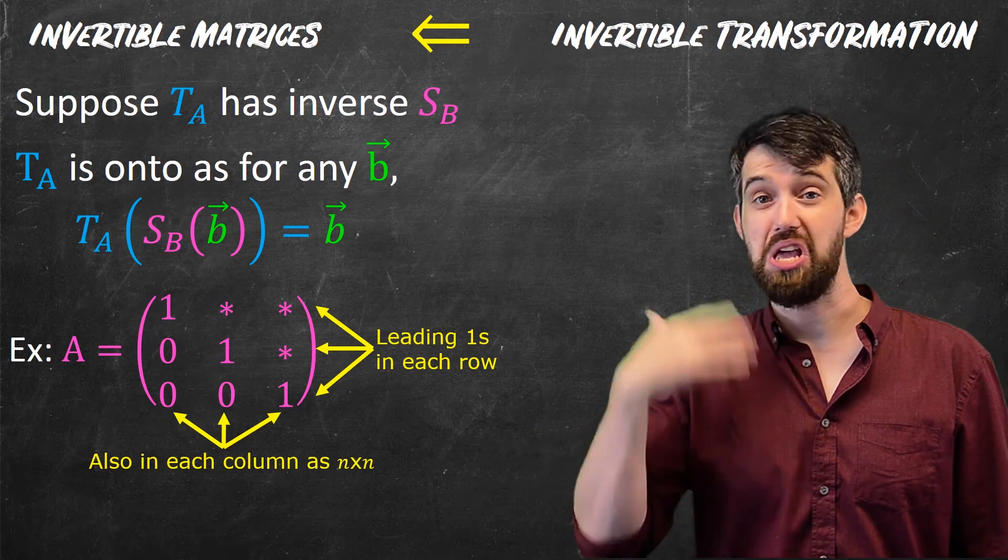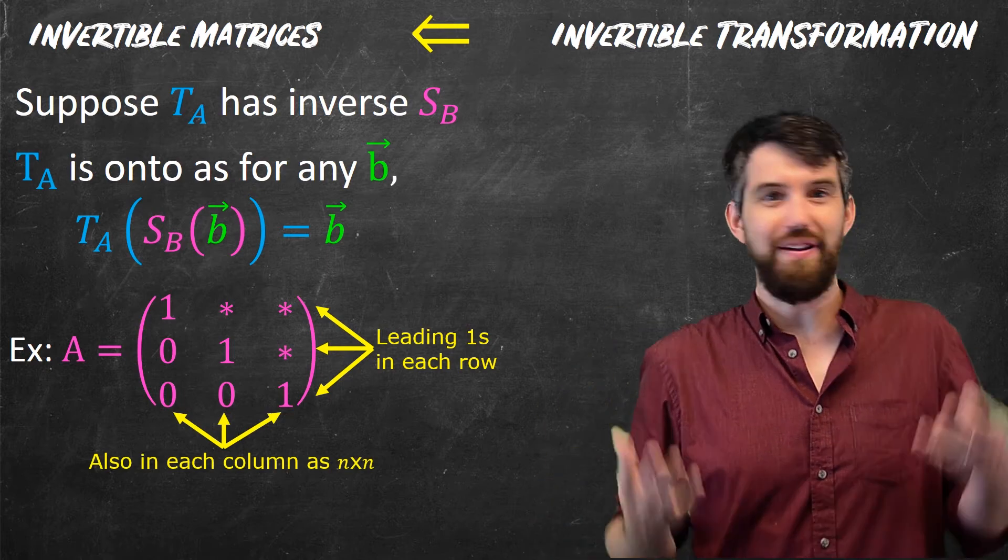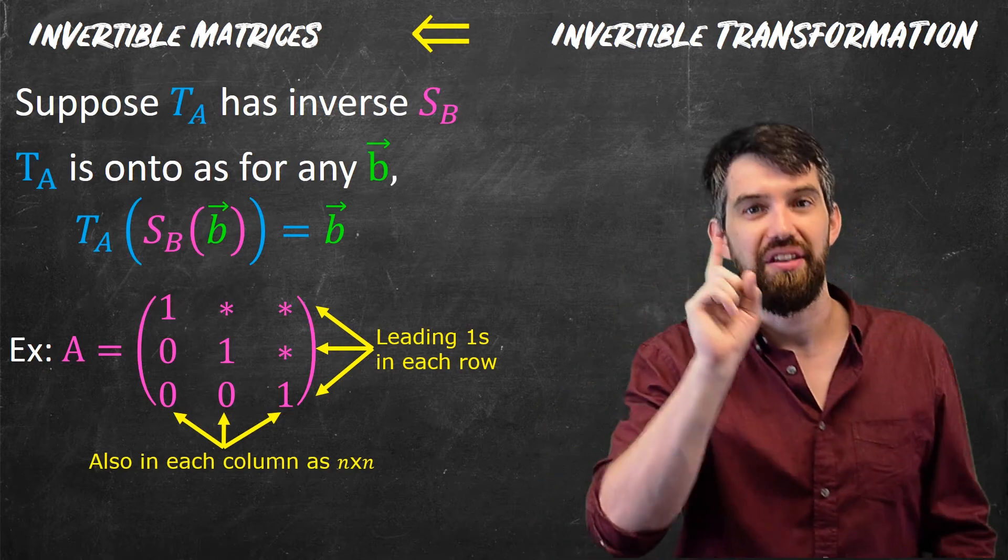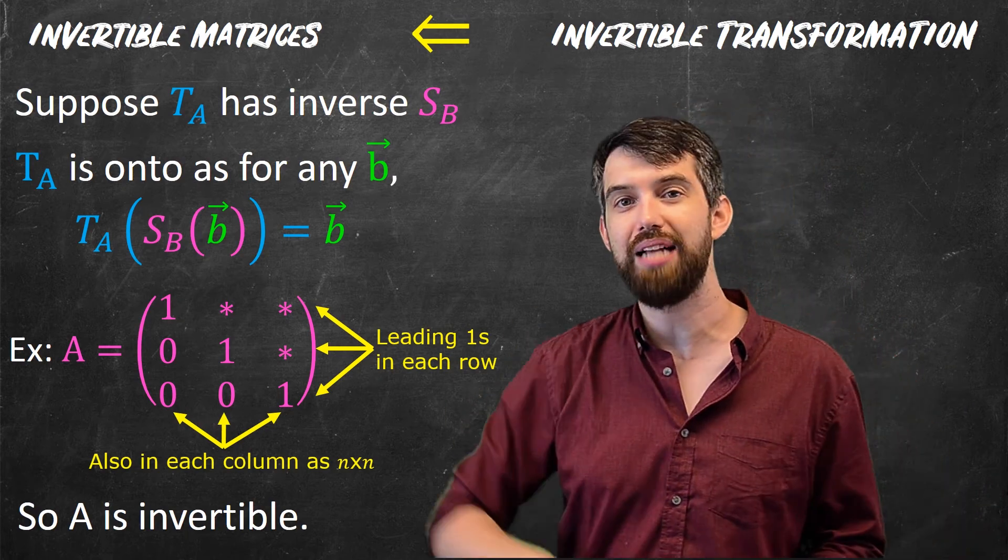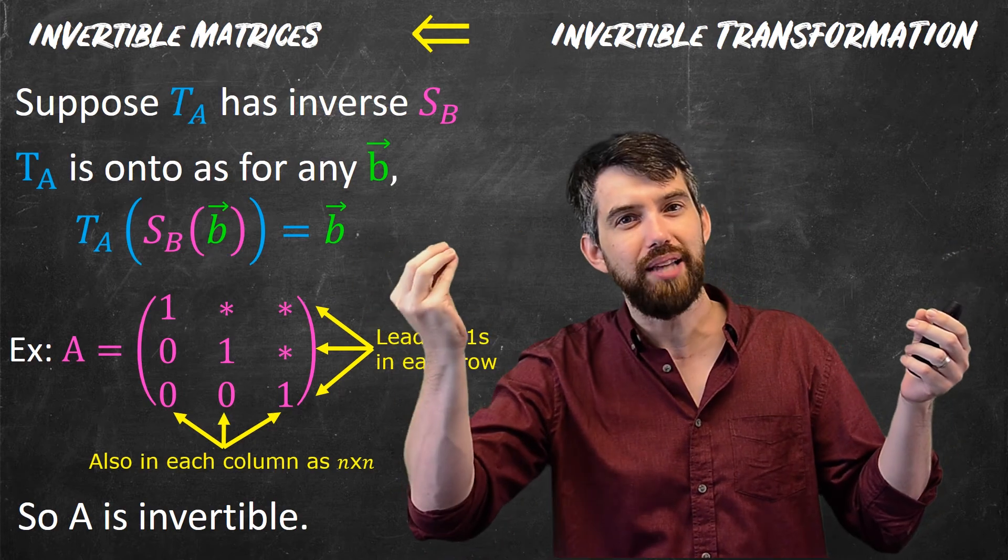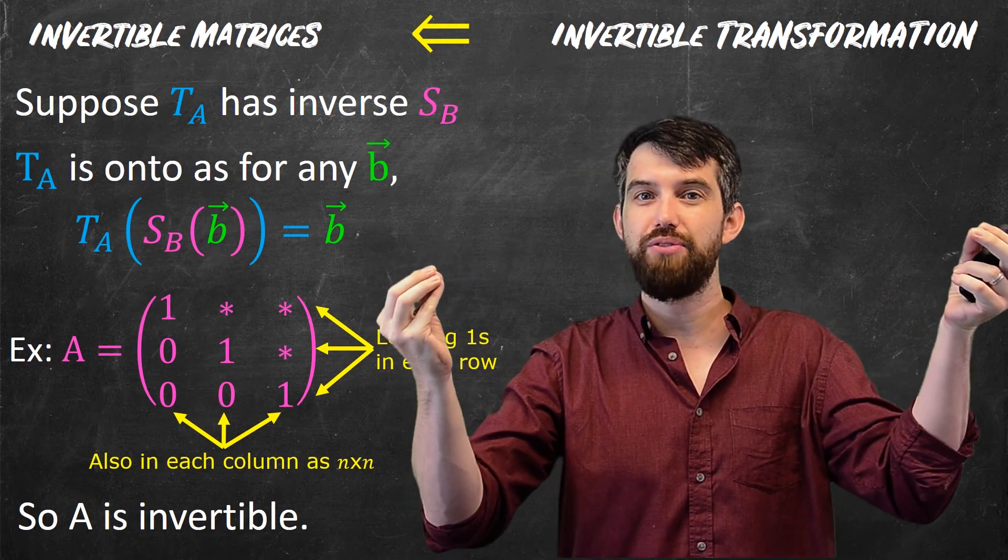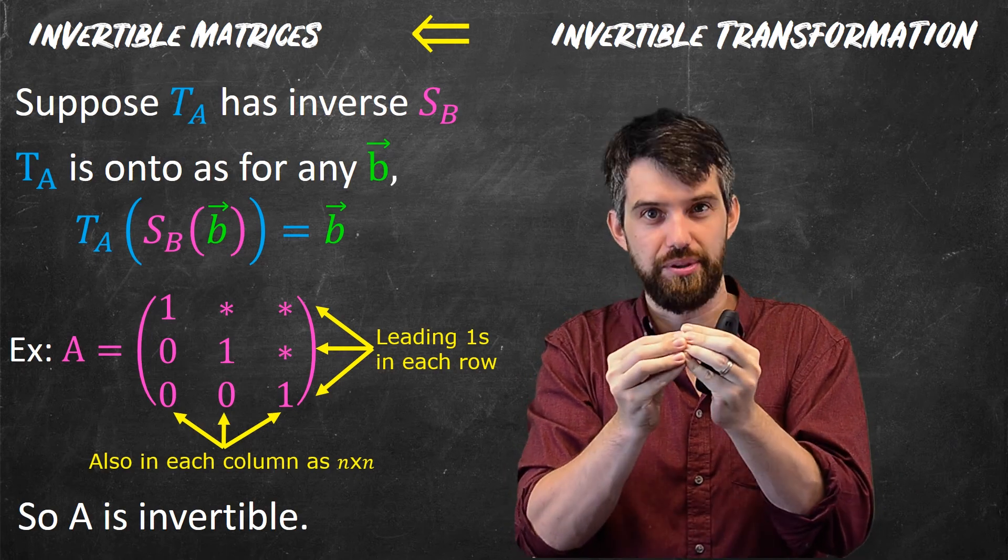And in that case, the RREF form of this is the identity matrix. And as we saw in our algebraic construction, if I can take a matrix to the identity, then it's going to be invertible. So indeed, we've managed to see both sides that an invertible matrix and an invertible transformation, while the one is algebraic and the other geometric, they're intimately connected in that one is invertible precisely when the other is invertible.